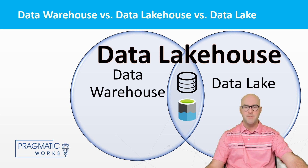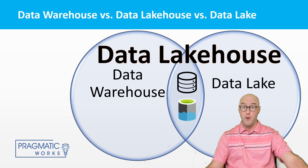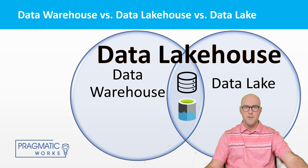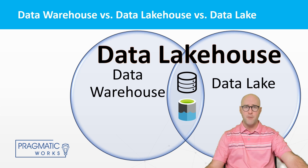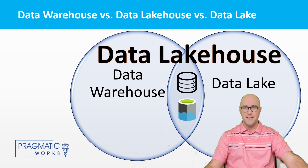The data lakehouse is this new database management architecture that combines the best features from both the data lake and the data warehouse. Its storage layer is going to be the data lake itself — with all its scalability, flexibility, and cost savings — combined with the performance and reliability of the data warehouse. One of the ways it ties into Delta Lake is that the key feature of ACID transactions is something that is present in a data warehouse but by default is not inside of a data lake.